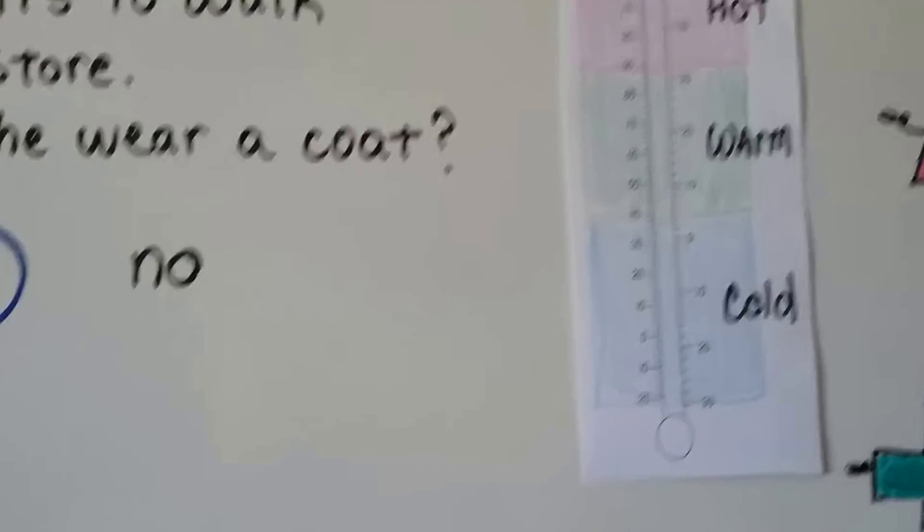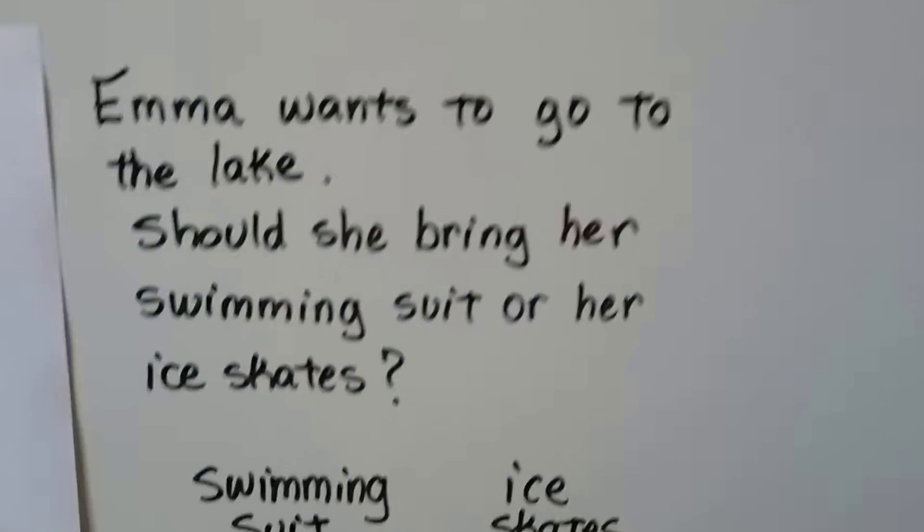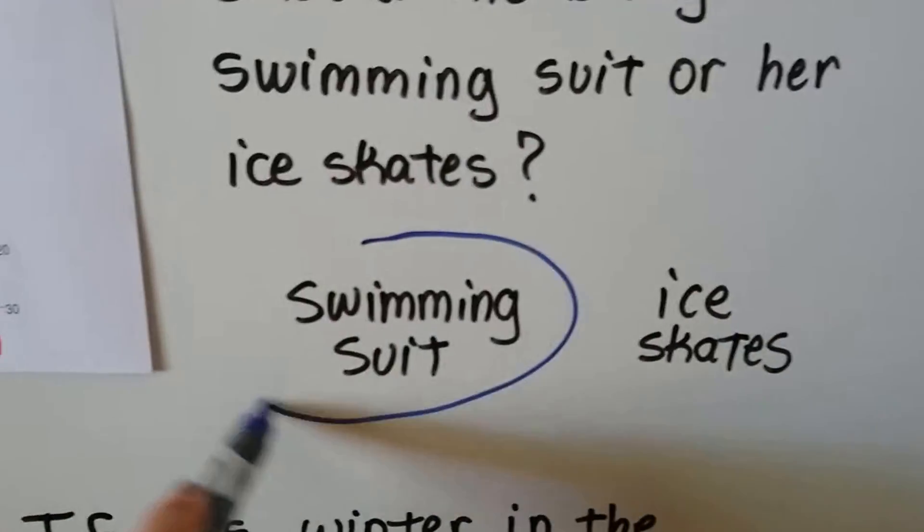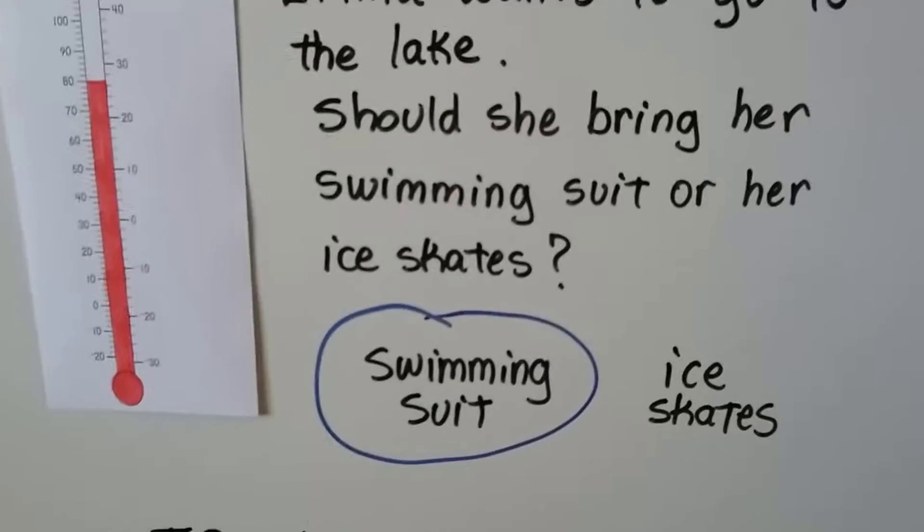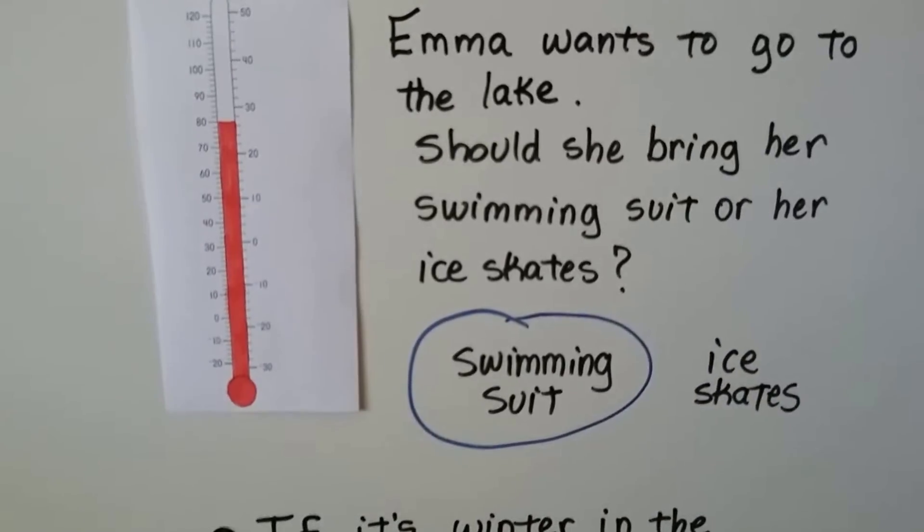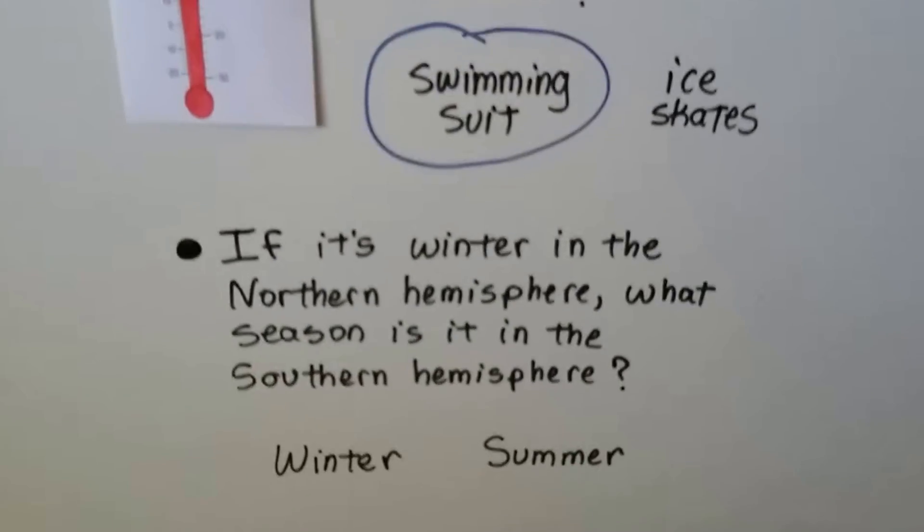So it would be too warm to go ice skating, wouldn't it? There wouldn't be any ice on the lake. So she should bring her swimming suit to go to the lake, shouldn't she? It's not cold enough for her ice skates. There's no ice. It's 80 degrees Fahrenheit. See that? All right, let's see if you can answer this one.